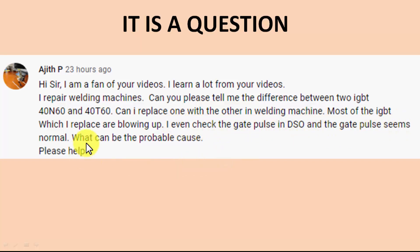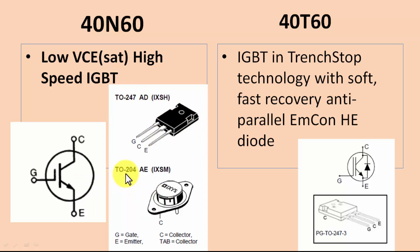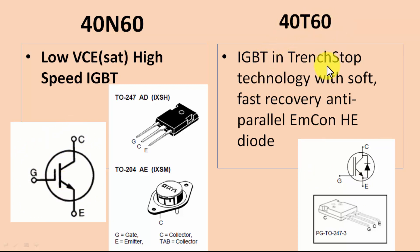The 40N60 is a normal IGBT — low VCE saturation, high speed. It is available in a TO-247 package and also in TO-264. When we look at the diagram, the symbol shows it is just a standard IGBT with no internal diode.